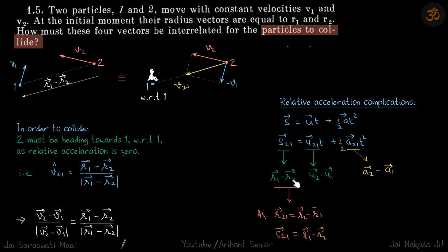Here, s₂₁ = r₁ - r₂, which is the condition for collision. Don't get confused: s₂₁ is not r₂ - r₁, but r₁ - r₂. While r₂₁ = r₂ - r₁, s₂₁ = r₁ - r₂.